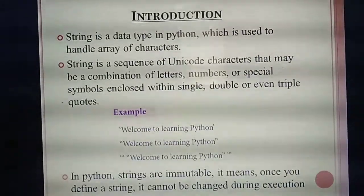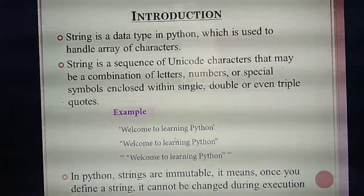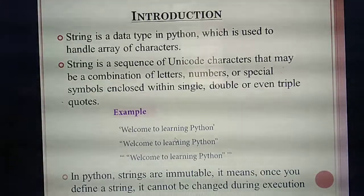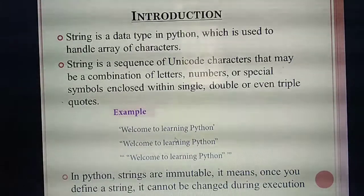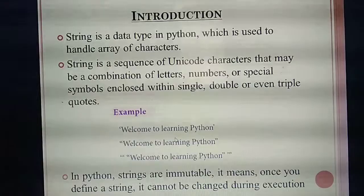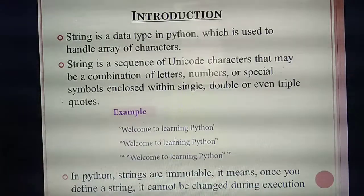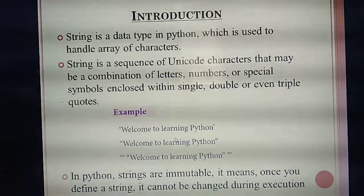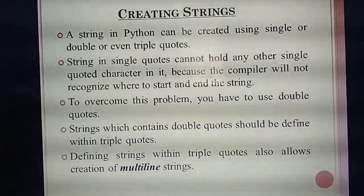Immutable means once you have defined a string in a program — for example 'Welcome to Learning Python' — you cannot change that sentence during execution. Once you have defined the string, you cannot modify or edit it at runtime. That is why we say strings are not changeable. Immutable means not changeable — you cannot change strings during execution time.